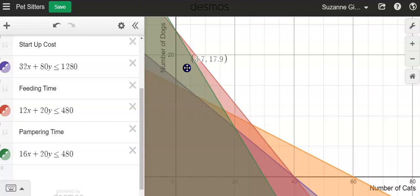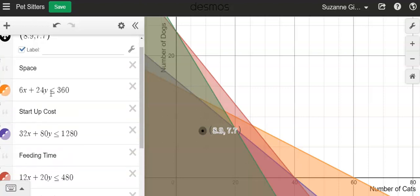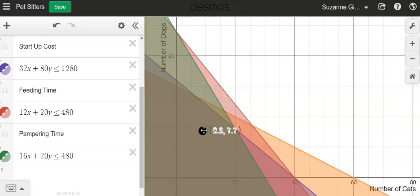And we have regions that satisfy some of the inequalities and don't satisfy others. But in this region here that's being shaded by all of the inequalities, that would be the solution to the system of all four inequalities. So you're looking for all of the regions to be shaded.